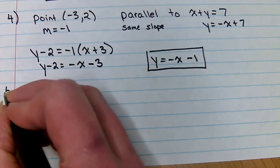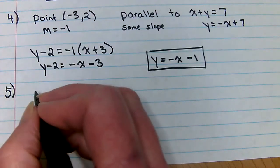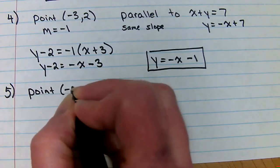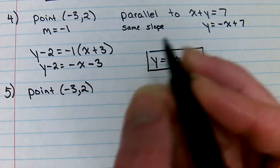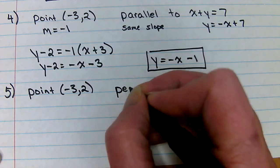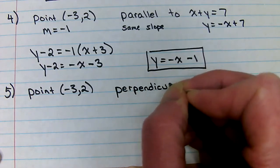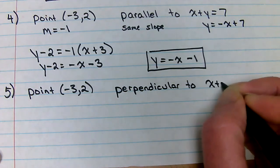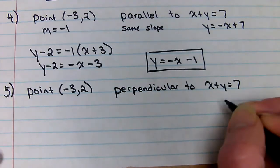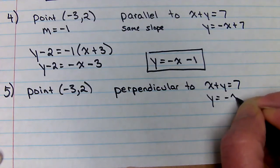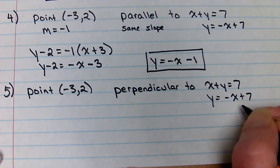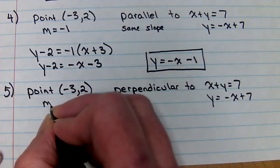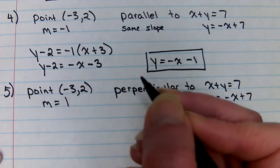Number five. We're going to the same point, but this time it says it's perpendicular to x plus y equals seven. So this slope was negative one. The negative reciprocal to that would be positive one.